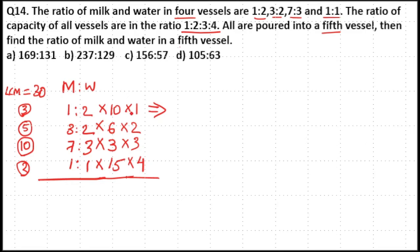That is 10 times 1. First ratio will become 10 times 1, which is 10, and 10 times 2, which is 20. Second ratio will become 6 times 2, 12, times 3, 36, and 6 times 2, 24.